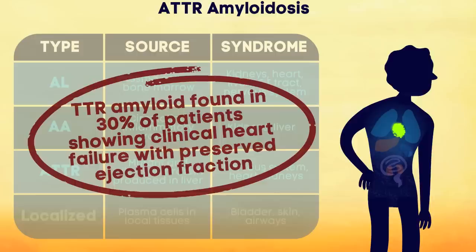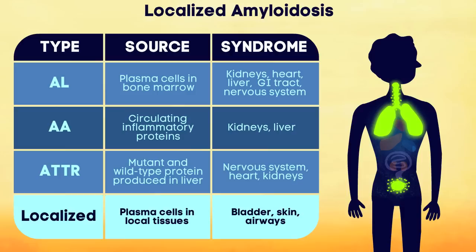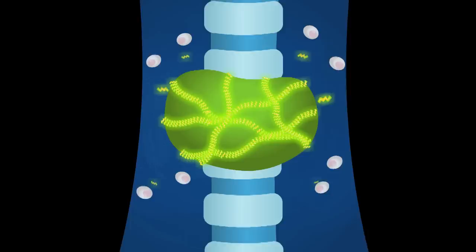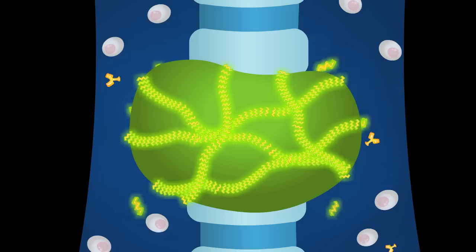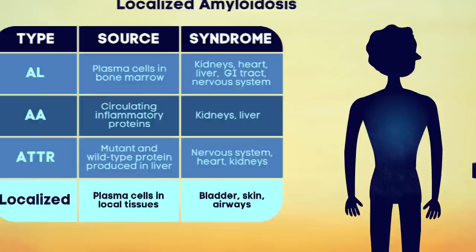Amyloid also sometimes deposits in isolated areas, such as the bladder or airways, without evidence of a systemic disease. These localized, tumor-like deposits are made up of light-chain proteins, similar to AL amyloidosis. In this case, the plasma cells producing the amyloid are in the affected tissues, not in the bone marrow.